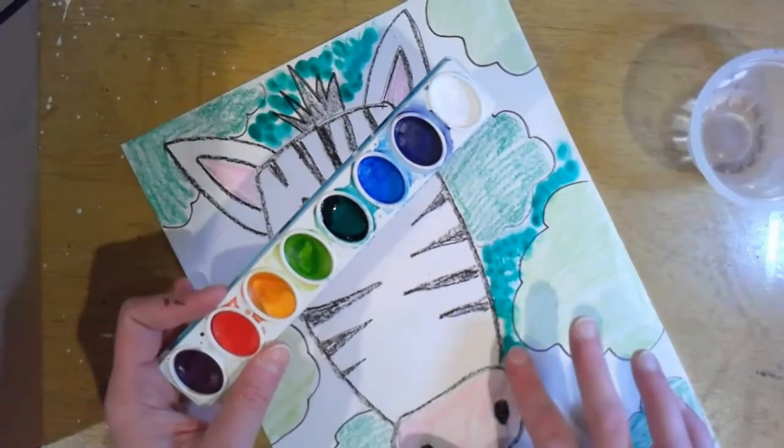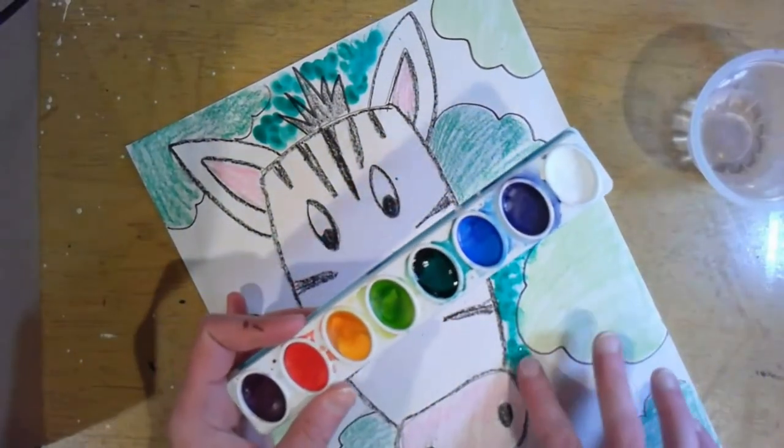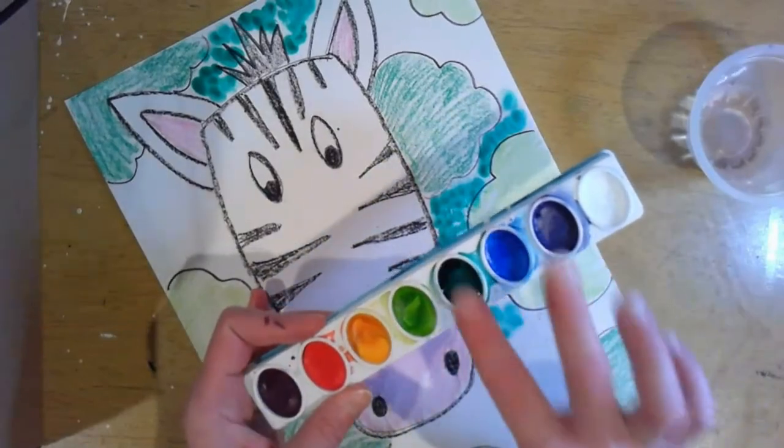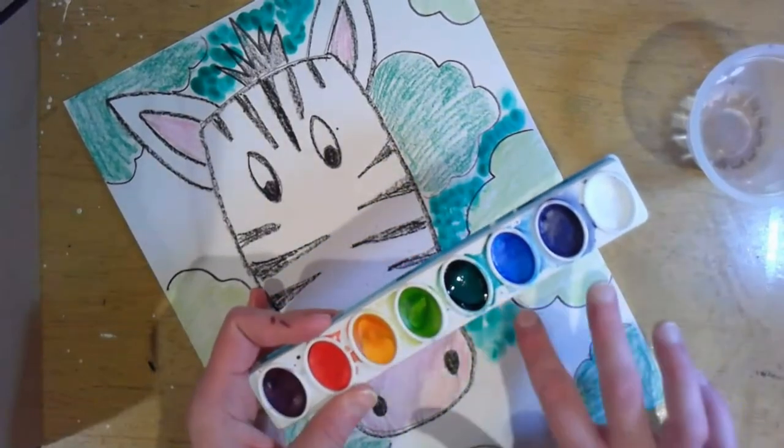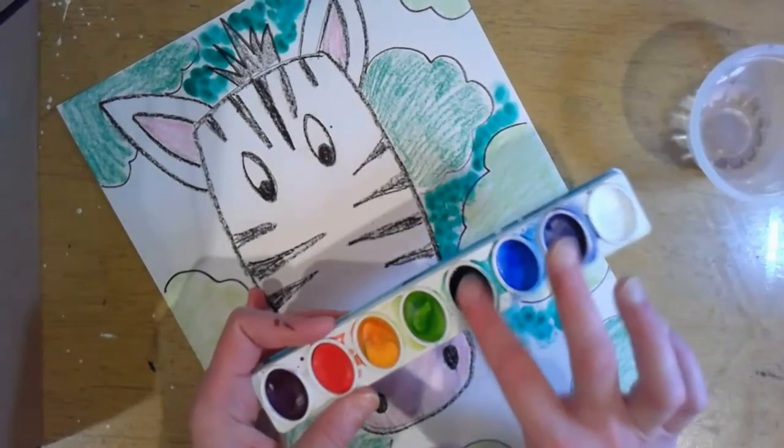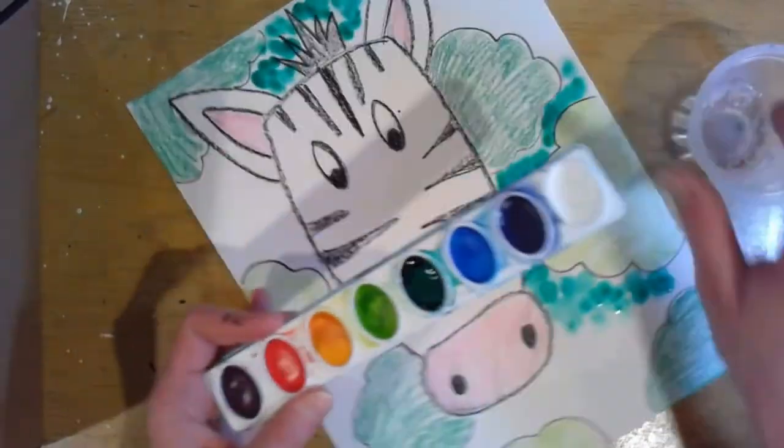Now your background, like I said, can be however you choose to make it. It doesn't have to be like this. You could also use your fingerprint to make flowers, or you can use your fingerprint to make your stripes, although I think that would be a little bit tricky.